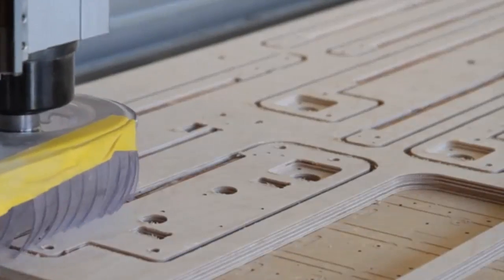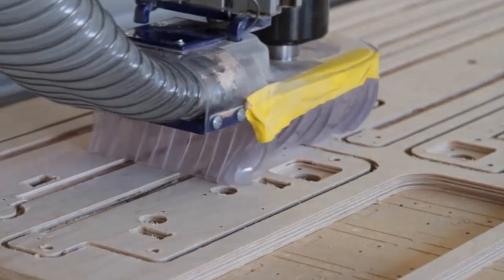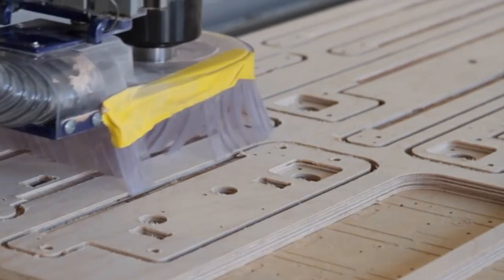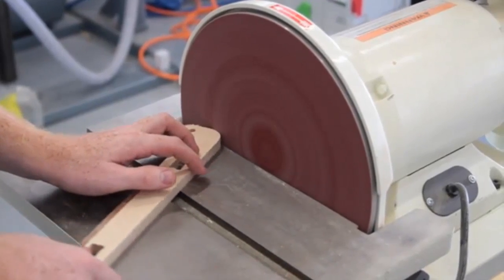We will be manufacturing the Watercolor Bot right here at our shop in California. The main chassis of the Watercolor Bot is cut from American hardwood plywood with a CNC router, then sanded and laser engraved to provide the markings.